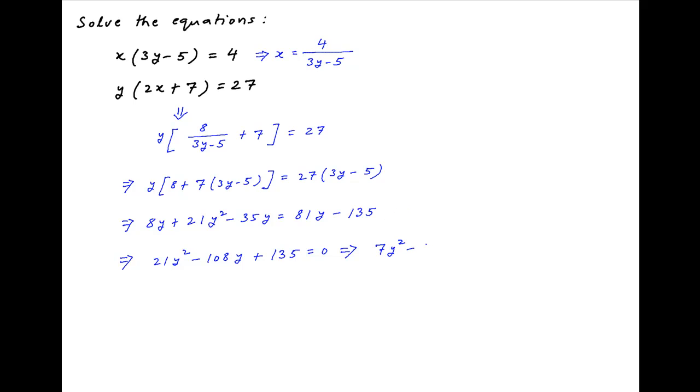Dividing by 3, this results in 7y square minus 36y plus 45 is equal to 0. This can be expressed as 7y square minus 21y minus 15y plus 45 is equal to 0. Which implies that 7y times in brackets y minus 3 minus 15 times in brackets y minus 3 is equal to 0.